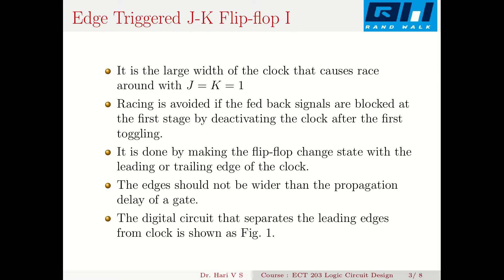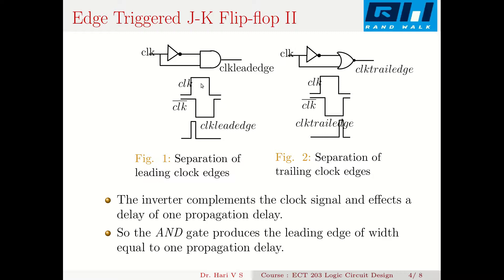This is done by making the flip-flop change states with the leading or trailing edge of the clock. The leading edge is when the clock changes state from 0 to 1, and the trailing edge is when it makes a transition from logic 1 to logic 0. The edges should not be wider than the propagation delay of one gate, so it is imperative to separate the edges from the clock. We see two circuits for separating these edges.